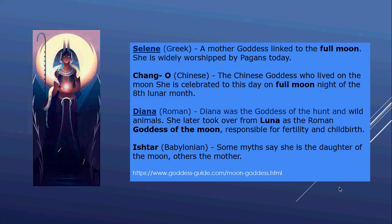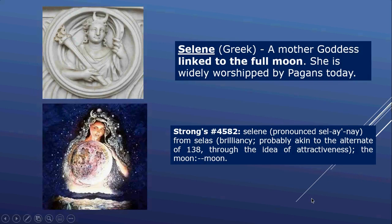Selene is the mother goddess linked to the full moon, widely worshipped by pagans today. Chang'e is the Chinese goddess of the full moon. Diana is the Roman goddess — the same as Semiramis and Ishtar — also known as Luna, the goddess of the moon. Ishtar is also the daughter of the moon. Selene has a Strong's number listed here.